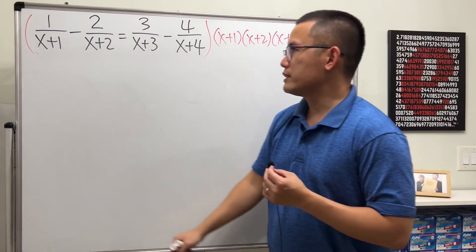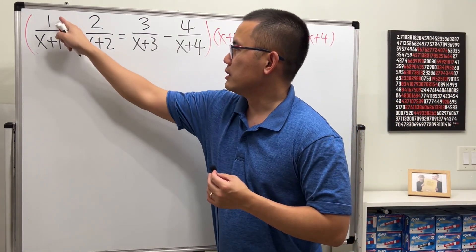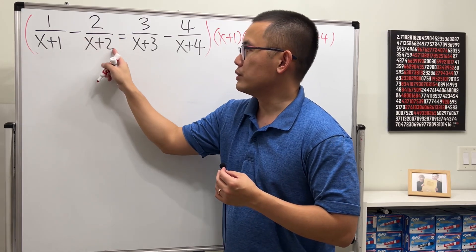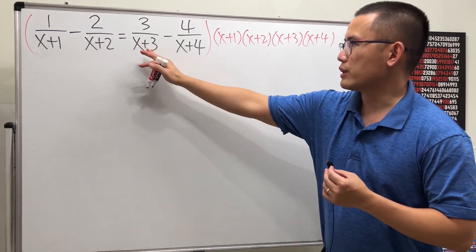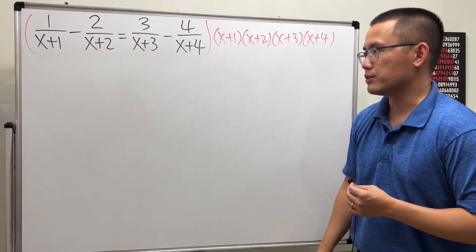By the way, x equals 0 is a solution because you can see 1 over 1 is just 1 and then 2 over 2 is just 1. So 1 minus 1 is 0 and you also get 1 minus 1 here. x equals 0 is a solution.